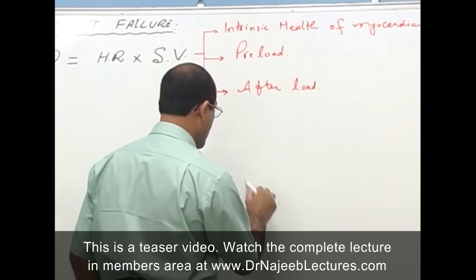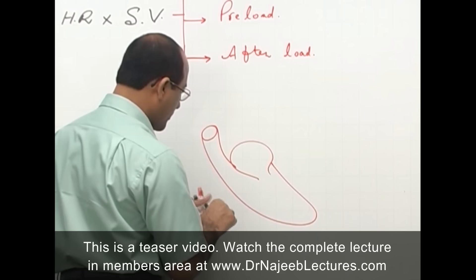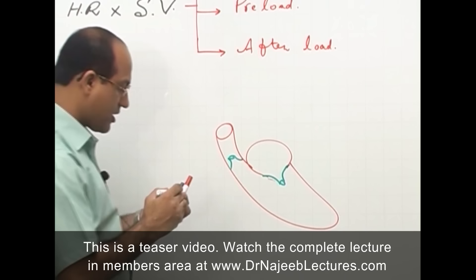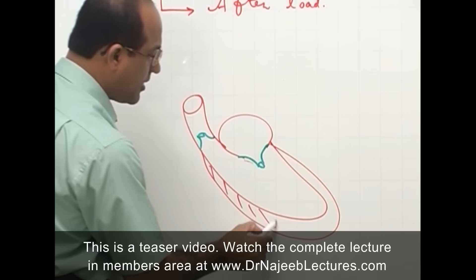If we talk about the left heart — left atrium, left ventricle — here is the mitral valve, and here is the aortic valve. And here is the left ventricular myocardium.